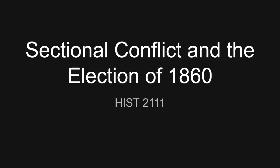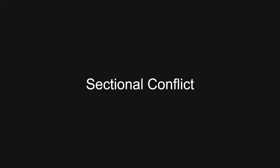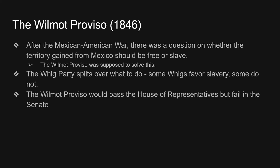Welcome to video number two for this week. This one is on sectional conflict and the election of 1860. This lecture is going to get us almost to the Civil War, and we're going to start first with sectional conflict. Most of this is about the 1850s, but to understand what's going on in the 1850s we have to kind of go back and forth a little bit.